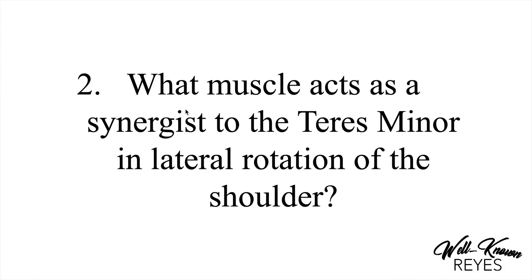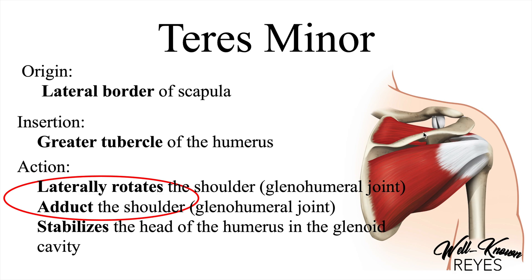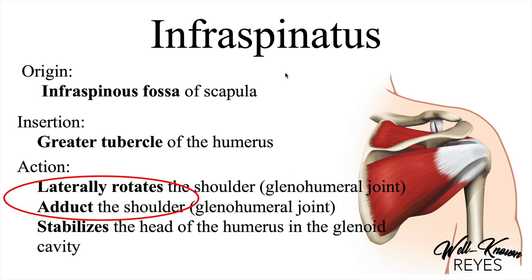Next question: what muscle acts as a synergist to the teres minor in lateral rotation of the shoulder? A synergist consists of muscles that help and assist each other. In this example, it's lateral rotation — so what other muscle helps the teres minor in lateral rotation? Teres minor laterally rotates and adducts the shoulder, both at the glenohumeral joint. If you said the infraspinatus, you are correct. The infraspinatus is a synergist along with the teres minor, and both laterally rotate and adduct at the shoulder.